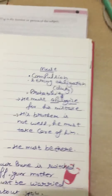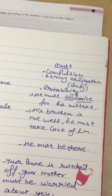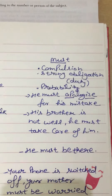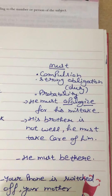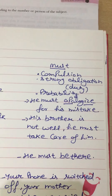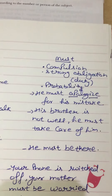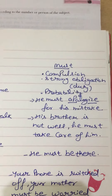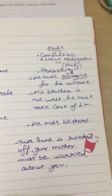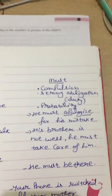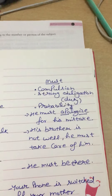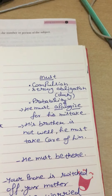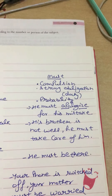Next is 'must'. It is easy to use because we use 'must' when there is compulsion, strong obligation, or duty. There is also the use for probability — when there are very strong chances of something. For example: 'He must apologize for his mistake' — when we use 'must' here, it means he has made a very big mistake and there is a strong moral obligation. We use 'must' instead of 'should' in such cases.